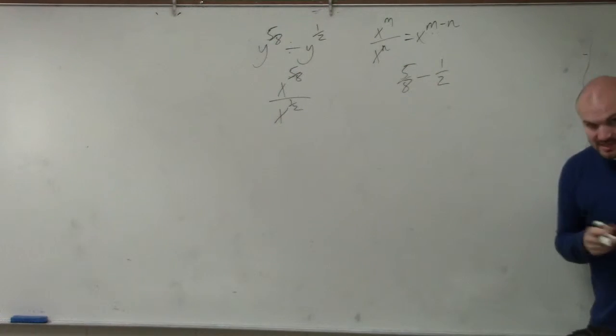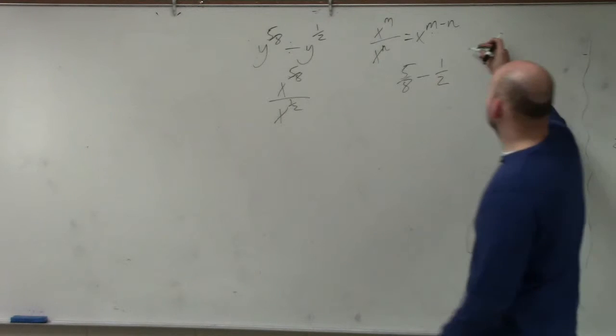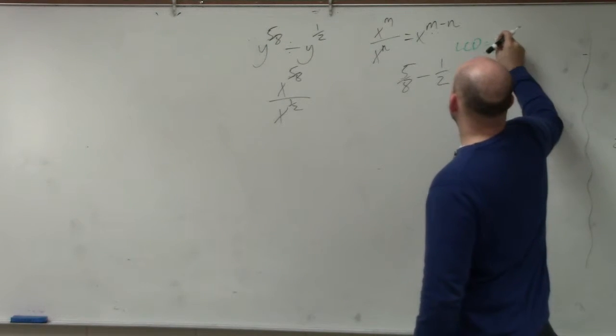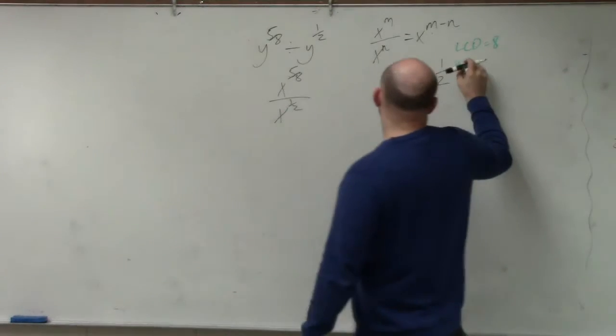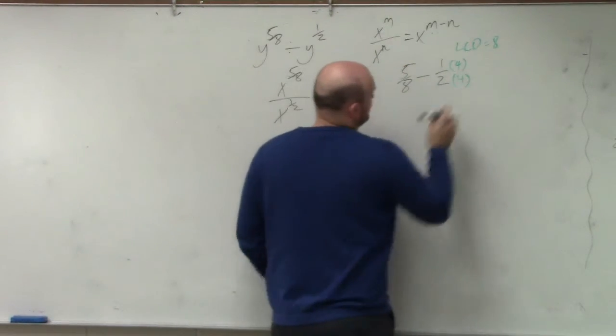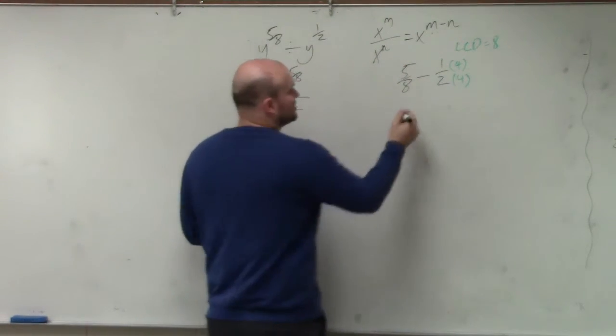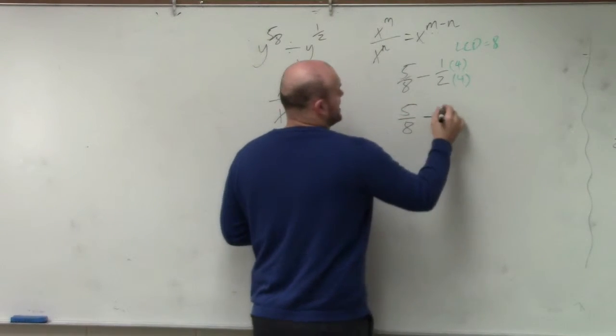So again, I have to have common denominators. The common denominator between 8 and 2 is equal to 8. Since this one already has a common denominator of 8, I'm just going to multiply by a multiplier or a fraction that's going to produce the same common denominator.